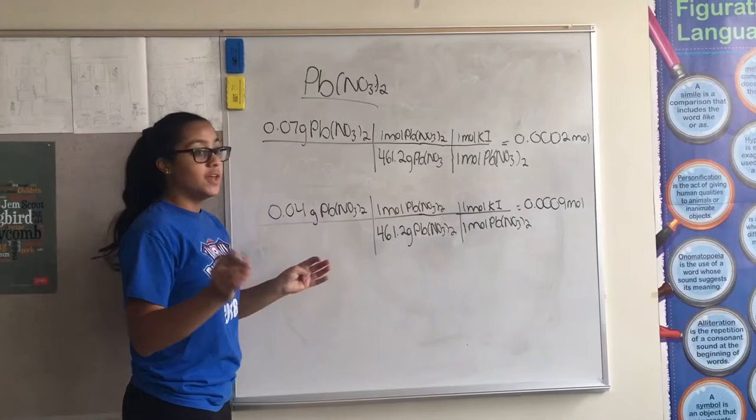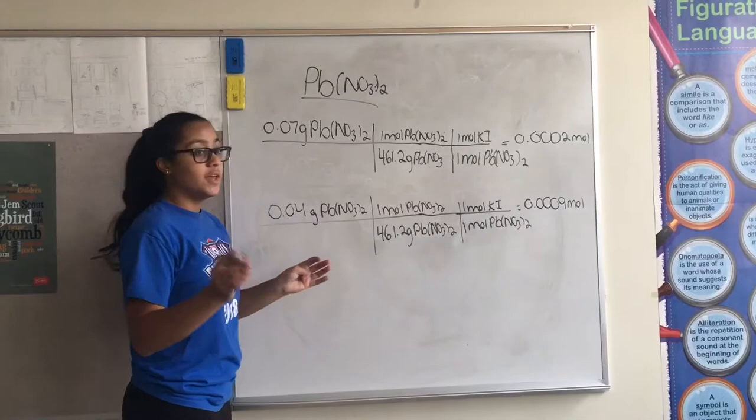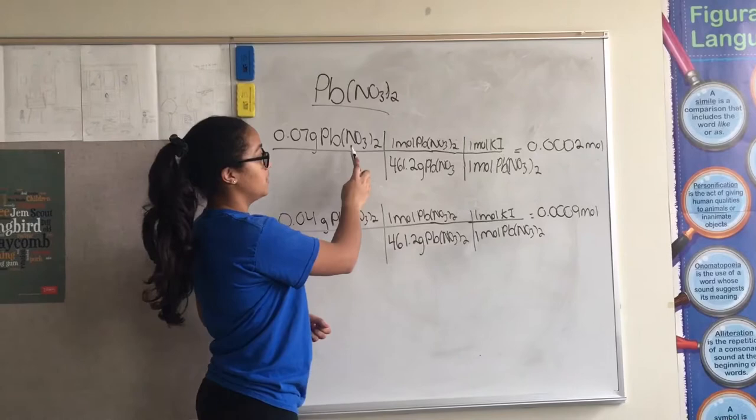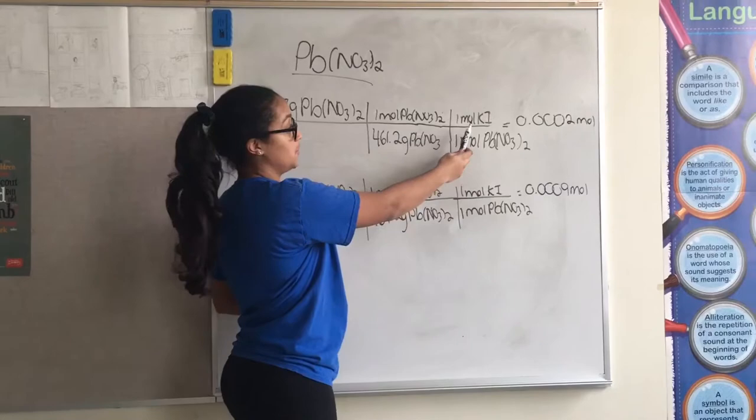Once we found out that the solute was lead two nitrate, we made the chemical reaction again and filtered the reaction so we could get the grams of both reactions. After getting the grams of lead two nitrate, we converted it to moles, and then we converted it to the moles of our murder weapon, which was potassium iodide.